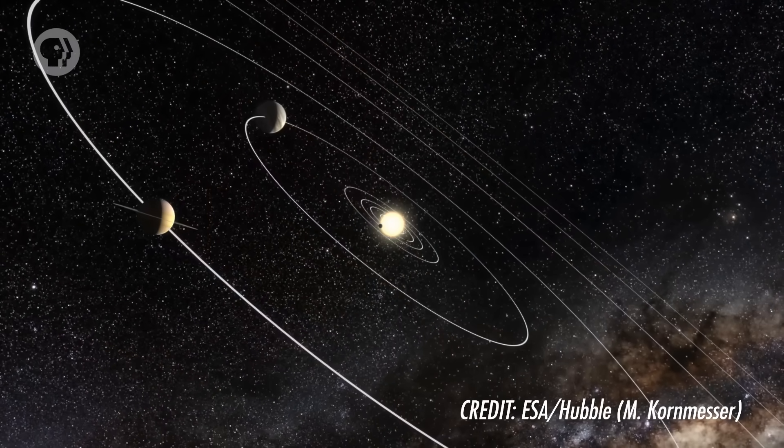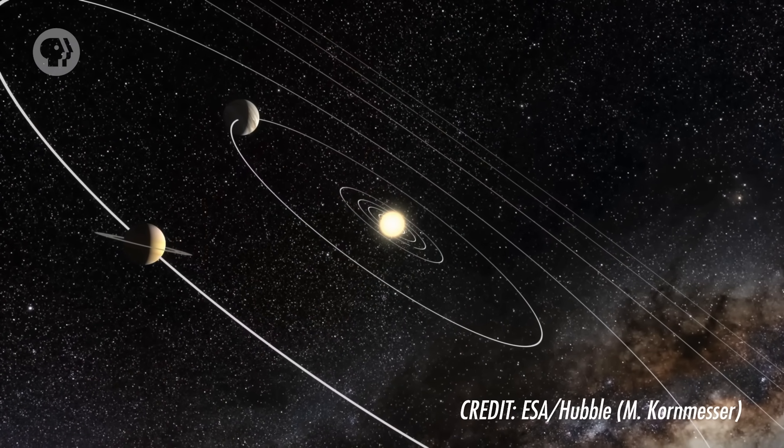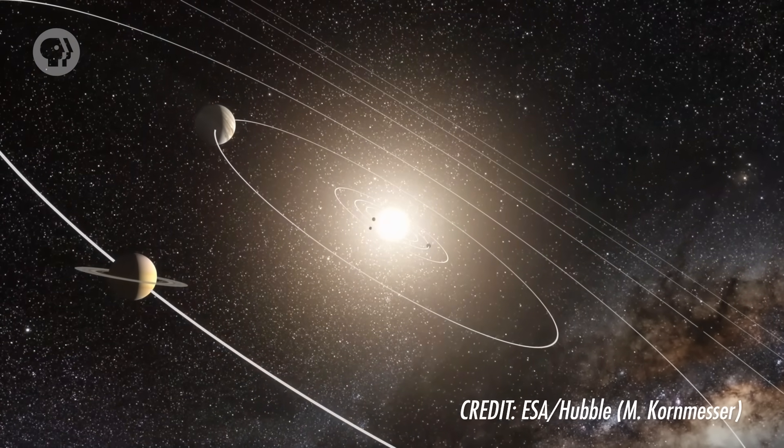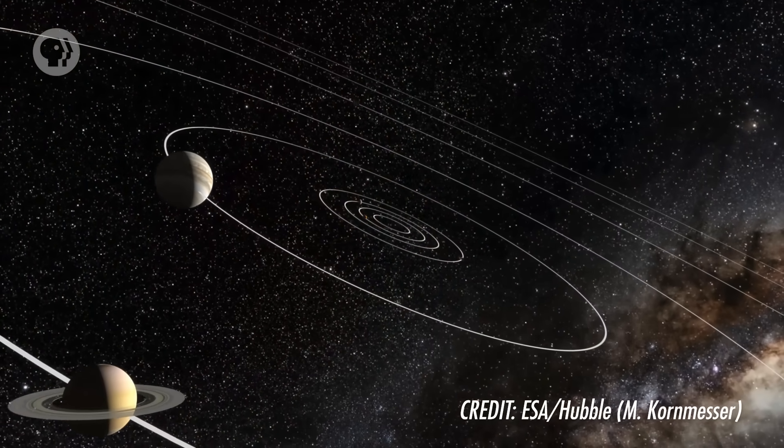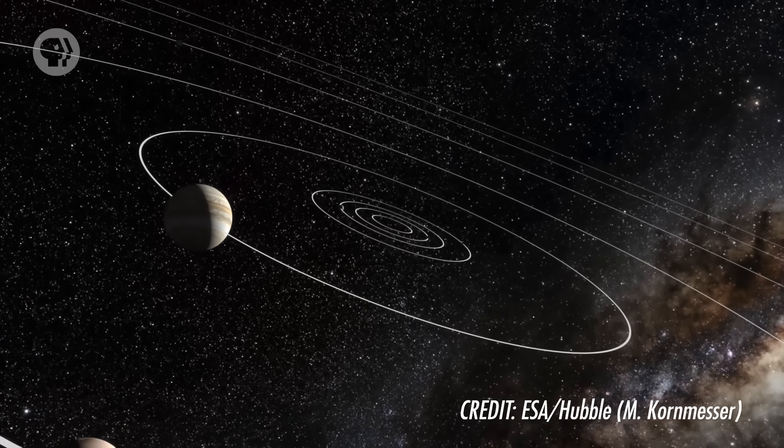If you could turn the Sun into a black hole, which you can't, but let's pretend you could, then the Earth would orbit it pretty much exactly as it does now. From 150 million kilometers away, the Earth doesn't care if the Sun is big or tiny. We're so far away that it doesn't matter. It gets to be a big deal when you get close.